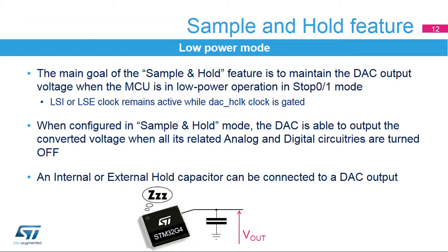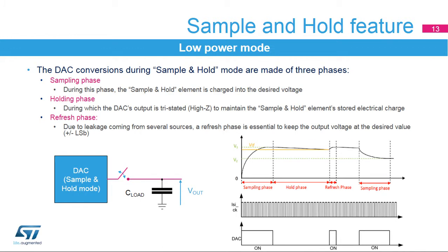The sample and hold feature maintains the DAC output voltage while not actively driving continuously. It relies on an internal or external capacitor that holds the voltage level at the end of the sample period. Then the DAC output can be set in high impedance. The capacitor will discharge over time, which is why a refresh period has been defined. Upon expiration of the refresh period, the DAC output will be actively driven again to recharge the capacitor. The DAC can work intermittently, charge the capacitor, and be powered down while the output voltage is kept on the hold capacitor.